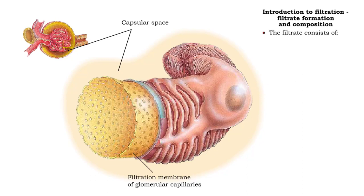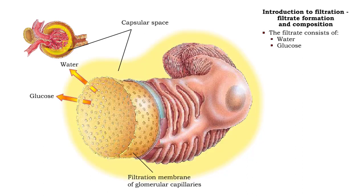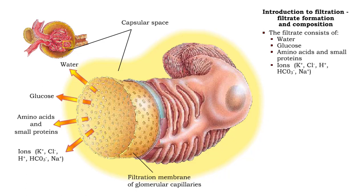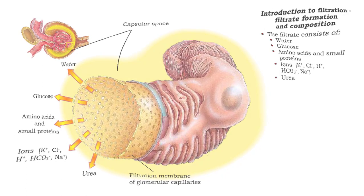Glomerular filtrate consists of water, glucose, amino acids and small proteins, potassium, chlorine, hydrogen, bicarbonate and sodium ions, and urea.